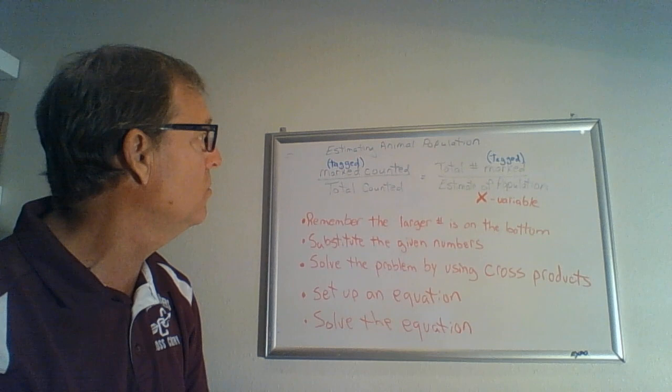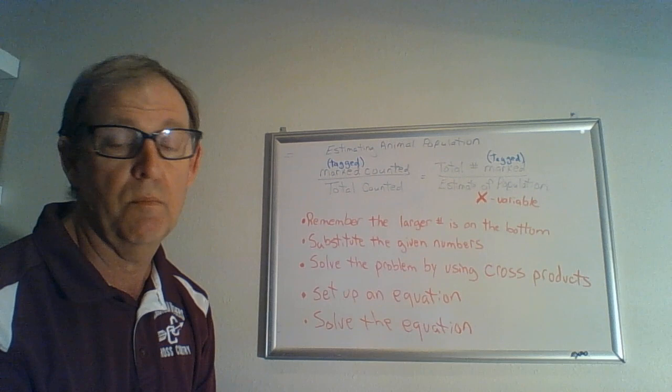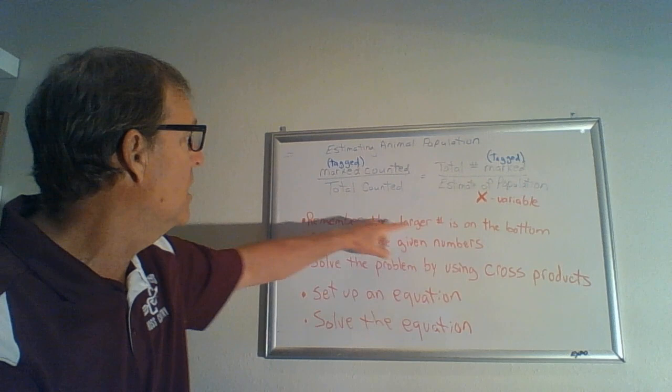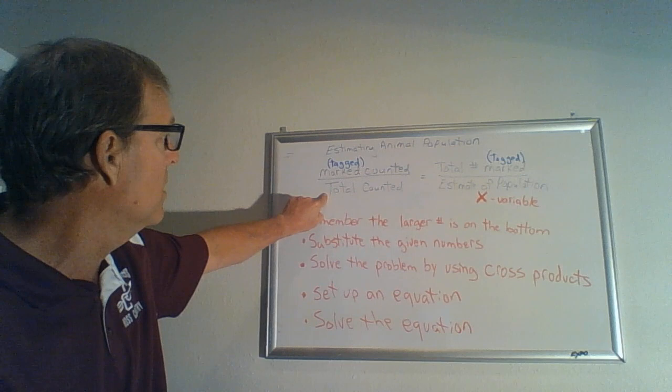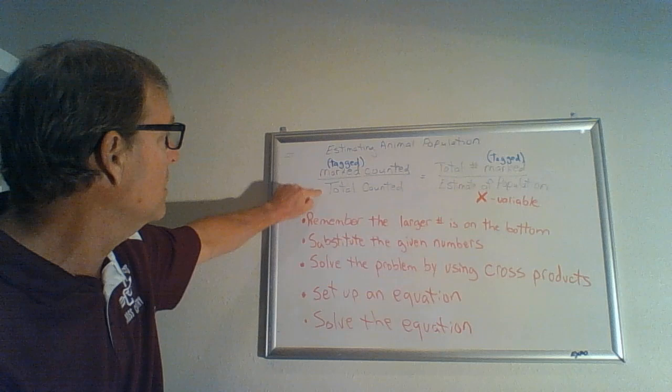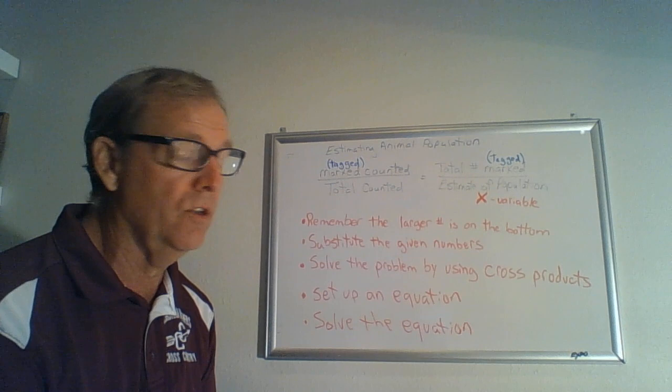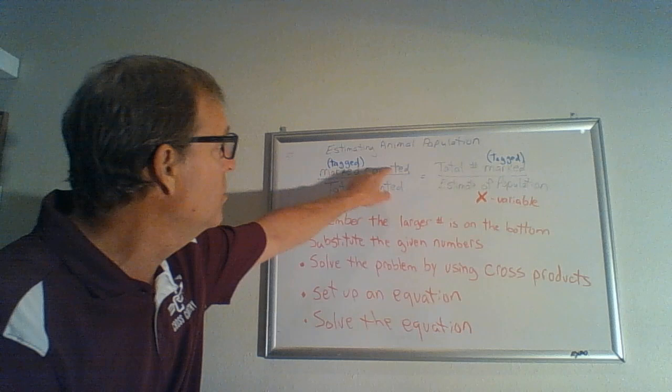And then the other side, the fraction is going to be the total number marked or tagged over what the estimation for the population is. And that's usually going to be the variable. So if you look at this, here's a couple reminders. Remember that the larger number is usually on the bottom. And so when we set up this fraction, if this number is smaller than this number, then you probably have them backwards. So take a good look at that. You're going to substitute whatever the given numbers are for each of these and just substitute it in.